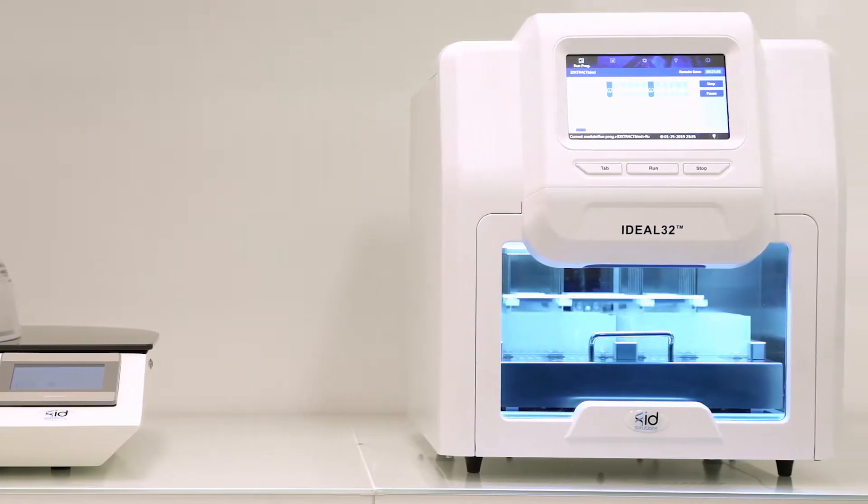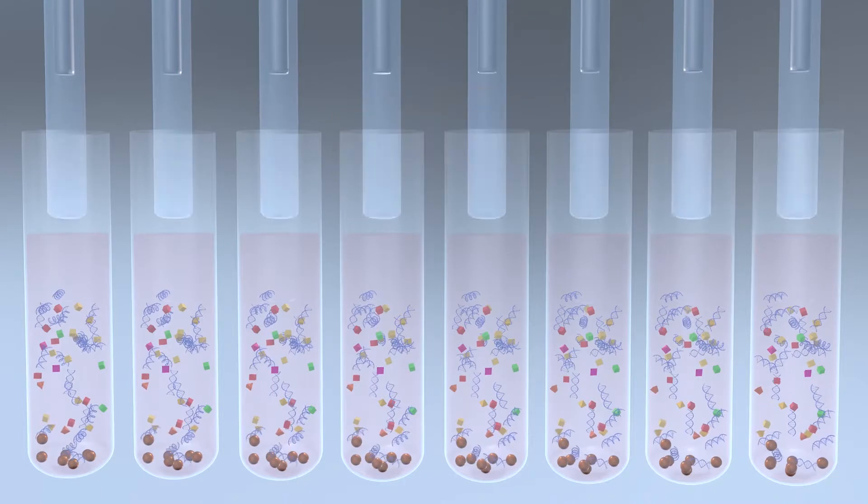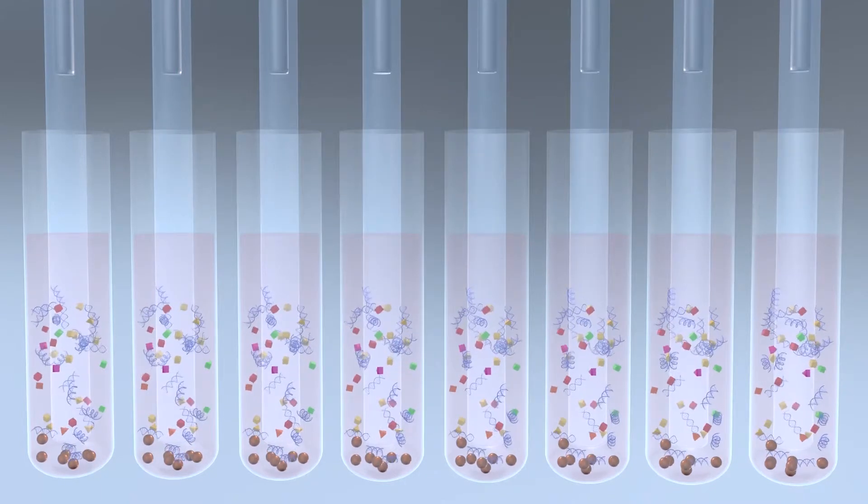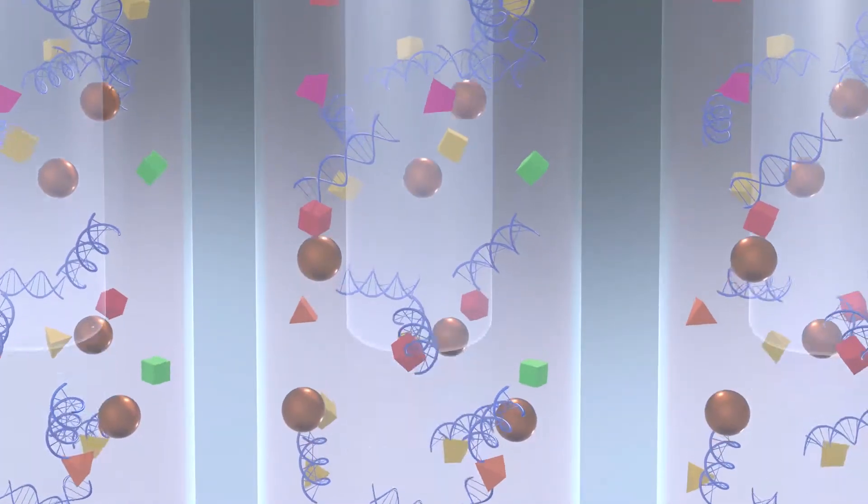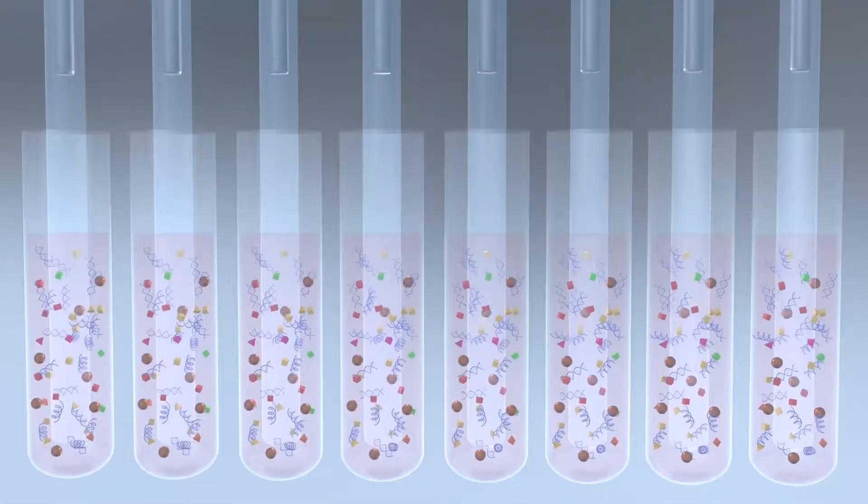The process includes four steps. The first steps are lysis and binding. In this step, the sample, the lysis and binding buffers and the magnetic beads are added to each well. Lysis of the cell membranes frees the nucleic acids.